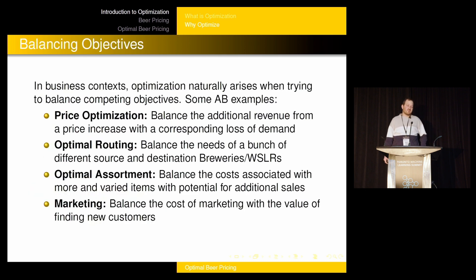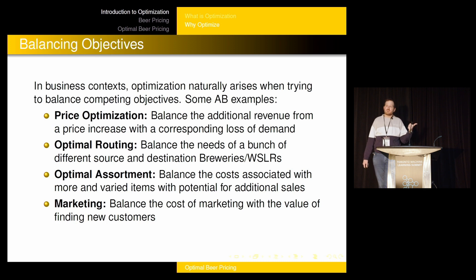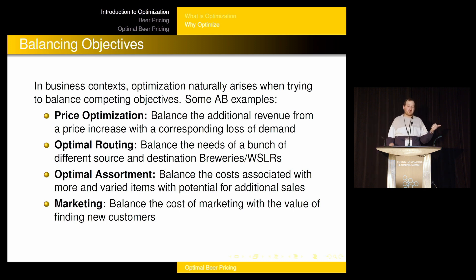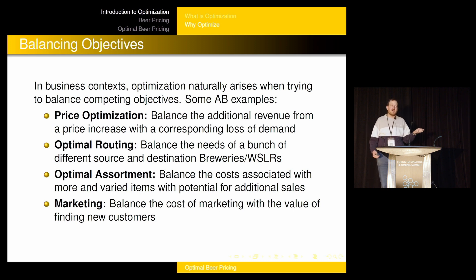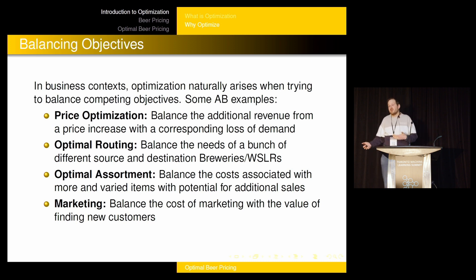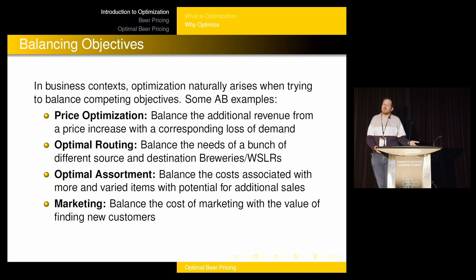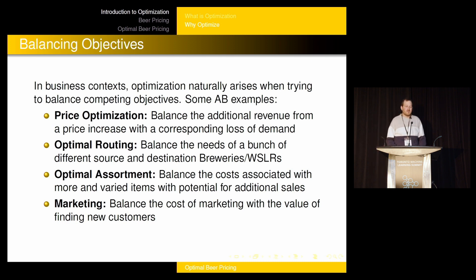Why should you use optimization? Here are some examples from Anheuser-Busch. Price optimization is one — you have to balance the additional revenue you might get from raising the price against losing some demand. You raise prices, maybe fewer people buy your product, but you make more money from those who do. Optimal routing is another great example: we have a bunch of breweries making beer, and we have to get that beer to wholesalers at the right place at the right time.